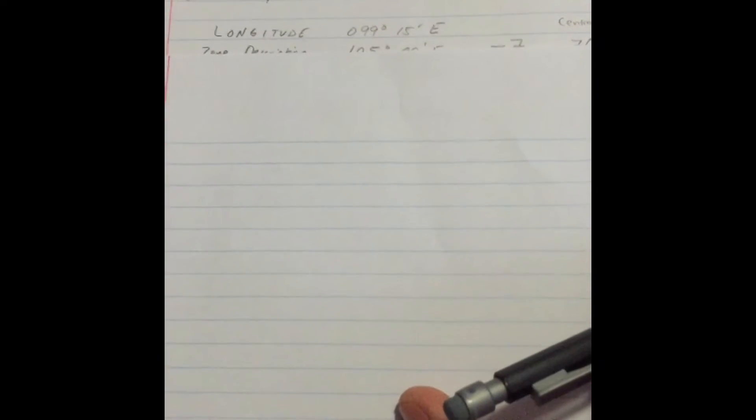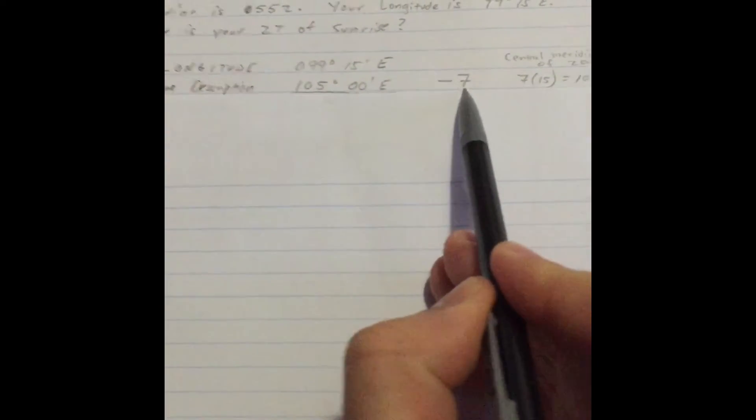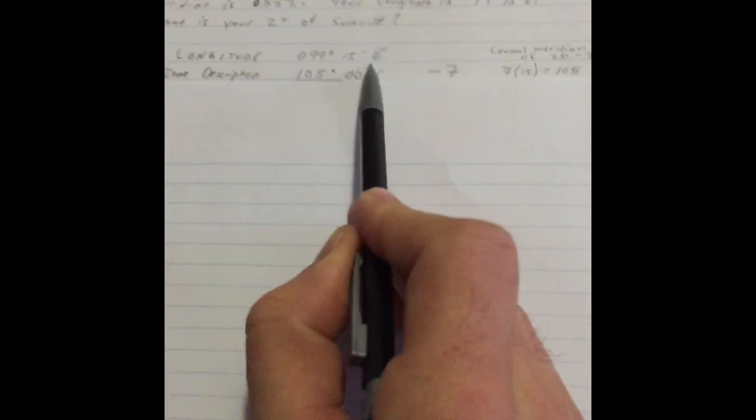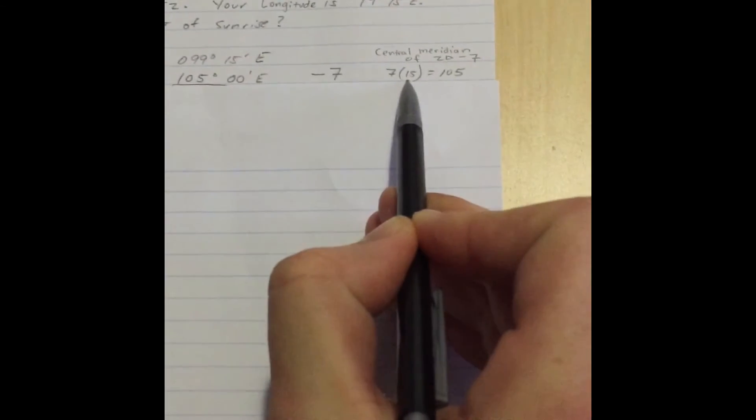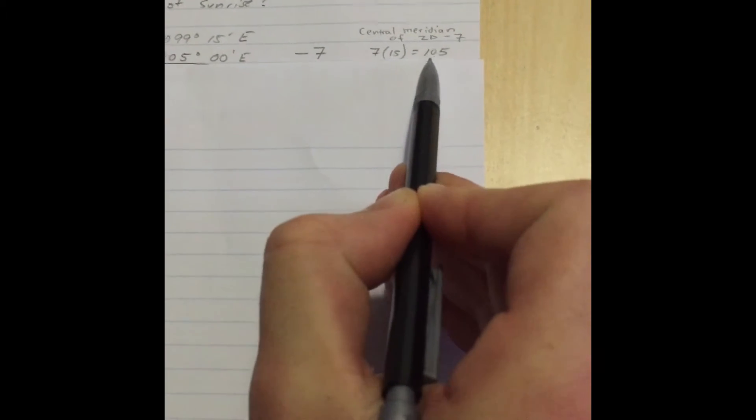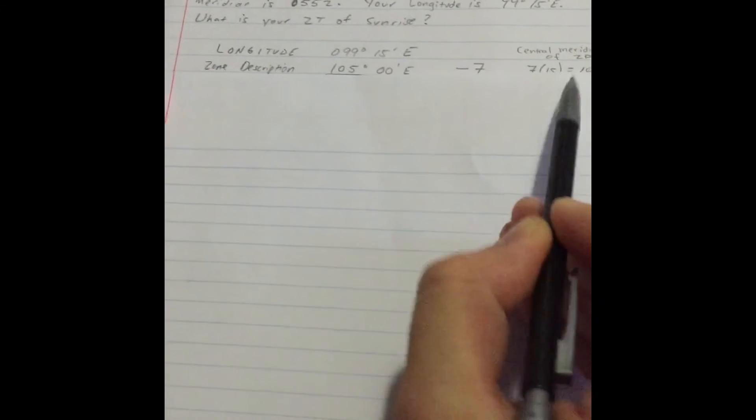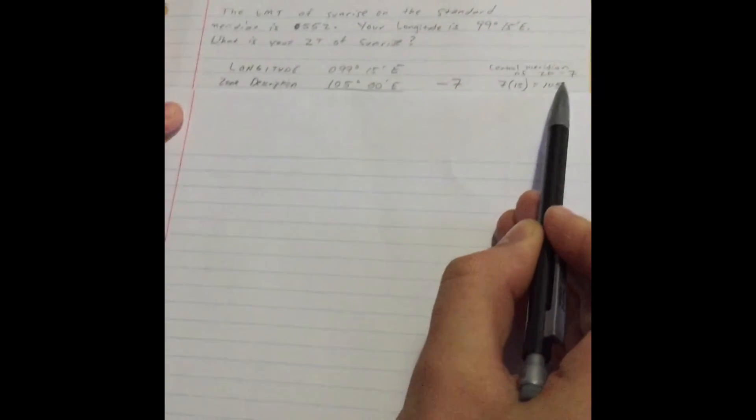Dividing that by 15, we find that our zone description is minus 7 because we're in the east. If we take this zone description and multiply it by 15, we get 105 degrees, 00 minutes east, which is our central meridian of the zone description minus 7.